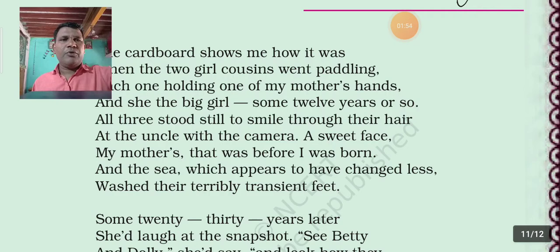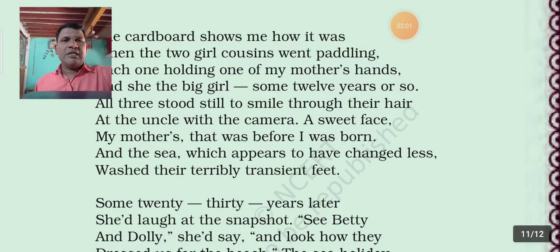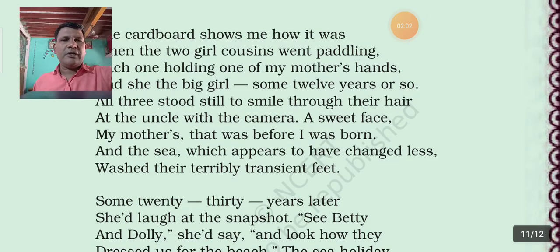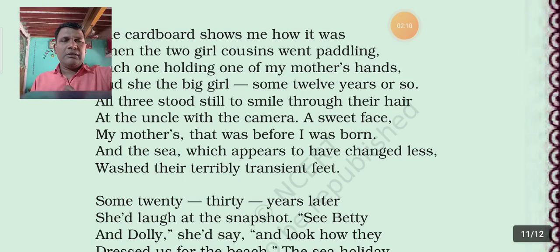That was before I was born — 'was' is repeated here, so repetition is used. And the sea, which appears to have changed less — in this line, the sea is used as a living noun, but the sea is non-living. So personification is used in this line.